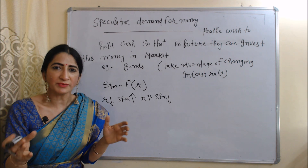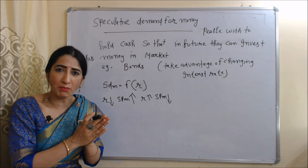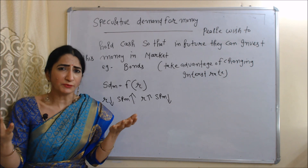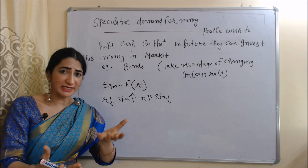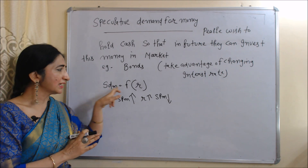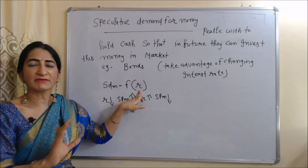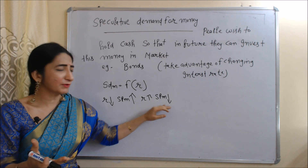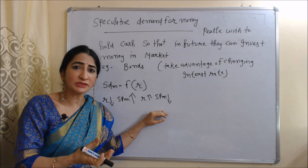Next is speculative demand for money. Speculative demand for money means people wish to hold cash so that in future they can invest this money in the money market — for example, investing in bonds to take advantage of changing interest rates. Speculative demand for money and interest rate have an inverse relation: SDM is speculative demand for money, r is interest rate, and both have an inverse relation.